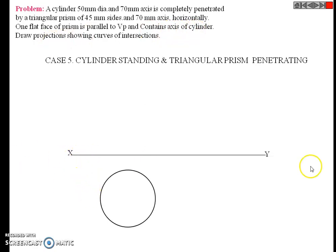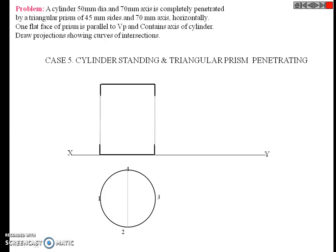The first step is to draw the XY line — a horizontal line. Below the XY line is the HP plane; above it is the vertical plane. Draw a cylinder of 50 mm diameter and give the numbering 1, 2, 3, 4. Project it for the front view.